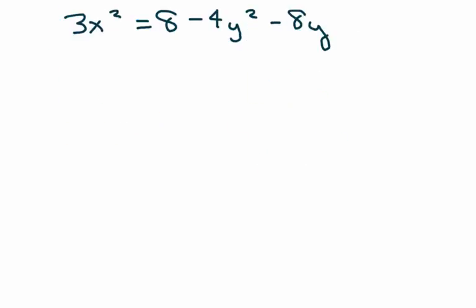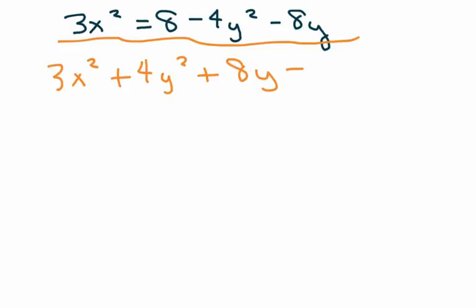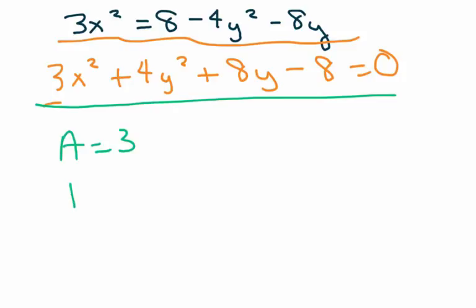All right, in this case I do have to rearrange this a bit, so I'm going to rearrange the whole thing. So we have 3x² + 4y² + 8y - 8 = 0, because that's your form here. My A is three, my C is four. My A does not equal my C, but they're both positive. They have the same sign, that means it's an ellipse.